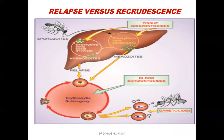Relapse occurs many months after the initial infection, mainly because of the hypnozoites — the merozoites remaining dormant inside the liver — when these become reactivated. Recrudescence, on the other hand, occurs very near the initial infection; the person may be asymptomatic for some days and then present with fever again. Recrudescence is due to incomplete clearance of the parasite from the blood, which can occur when the parasite is resistant to the drug used. Relapse occurs in vivax and ovale, whereas recrudescence can occur in any species of Plasmodium.